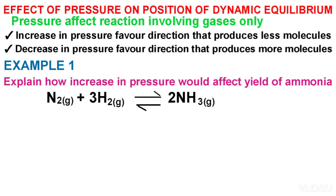Note 2: before answering, the student should know the number of molecules produced in the forward and backward reactions. In this example, the forward reaction produces 2 molecules (fewer molecules), and the backward reaction produces 4 molecules (more molecules). The 4 is obtained by taking 1 for nitrogen and 3 for hydrogen and adding them.